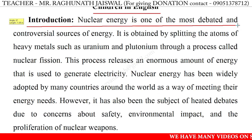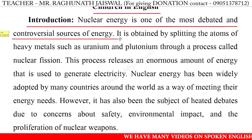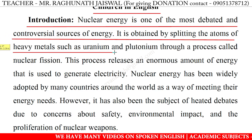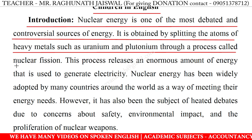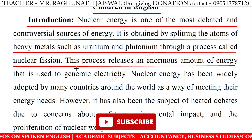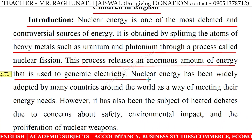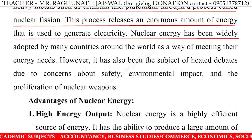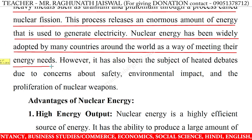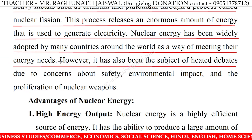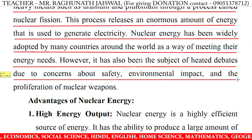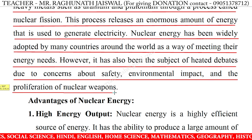Introduction. Nuclear energy is one of the most debated and controversial sources of energy. It is obtained by splitting the atoms of heavy metals such as uranium and plutonium through a process called nuclear fusion. This process releases an enormous amount of energy that is used to generate electricity. Nuclear energy has been widely adopted by many countries around the world as a way of meeting their energy needs. However, it has also been the subject of heated debates due to concerns about safety, environmental impact and the proliferation of nuclear weapons.